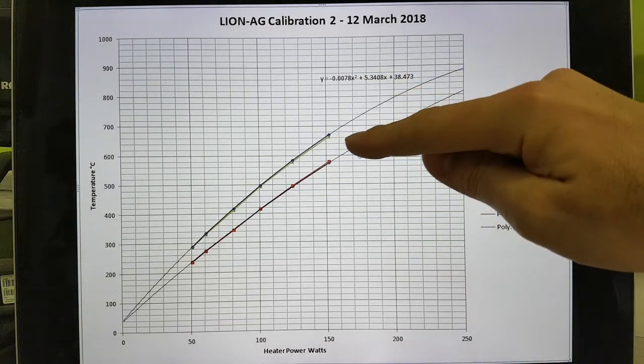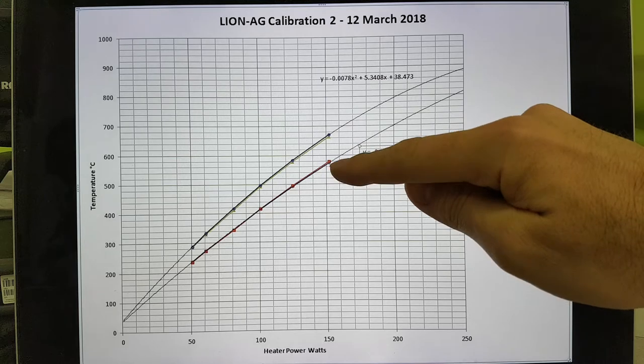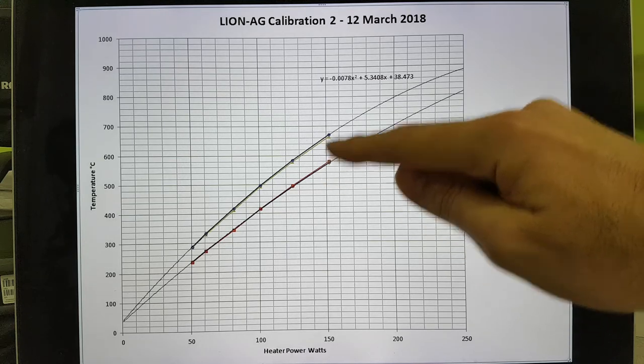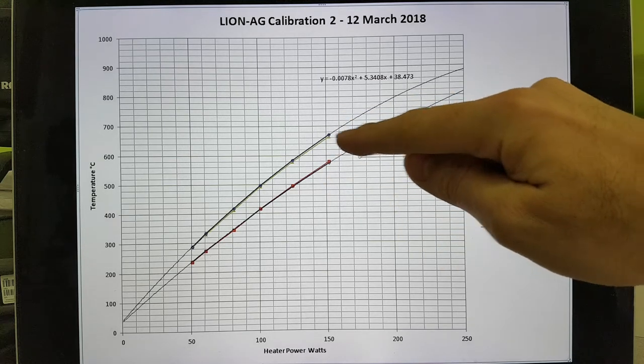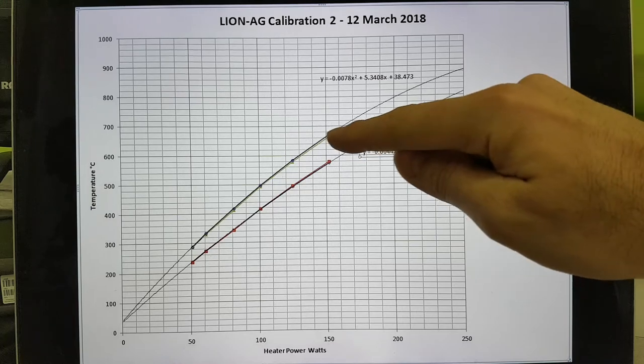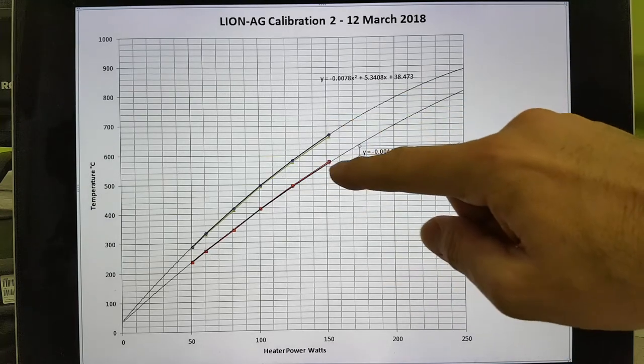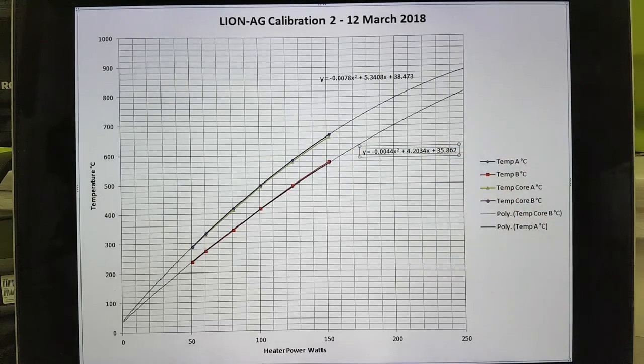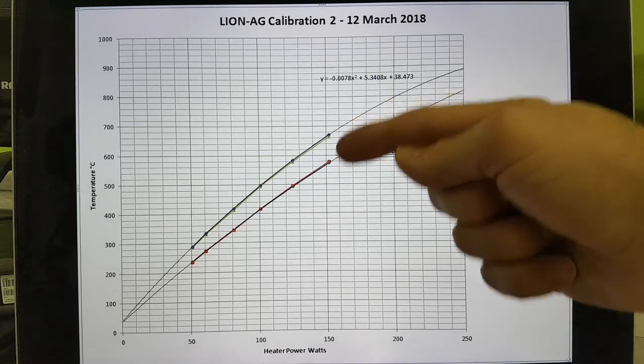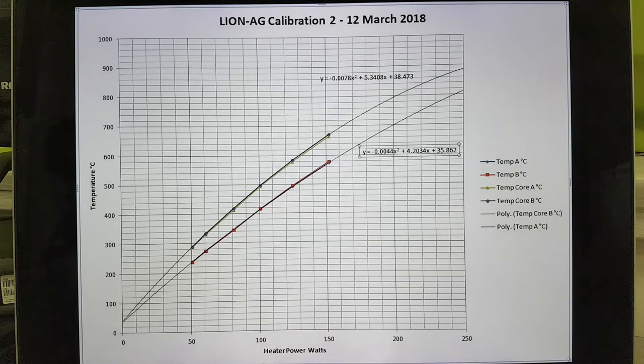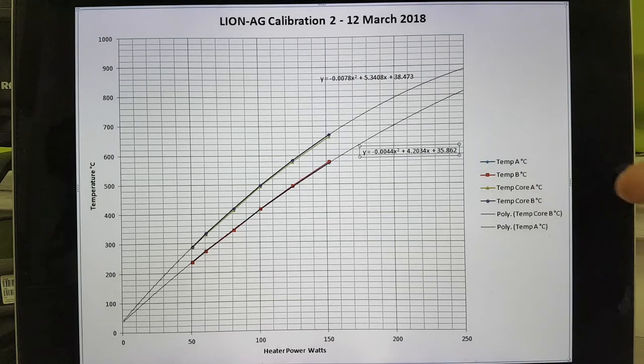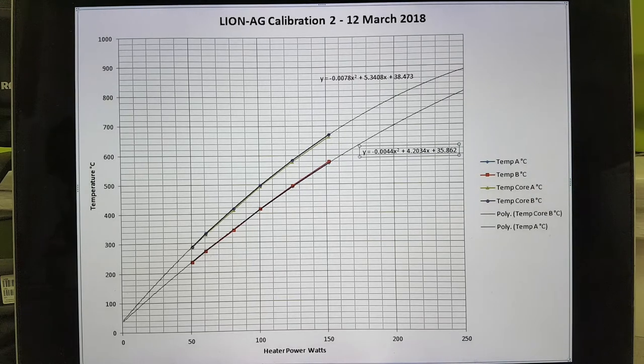So in the live data stream, you'll have core temperature and control temperature. It might be that we run the temperature control off the core or the control temperature as in Lion 1 and Lion 2. But this should give us very robust data between the control and the actual live so-called reactor and their core temperatures in the live data stream.